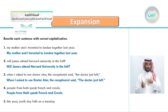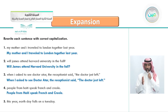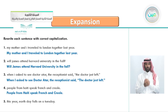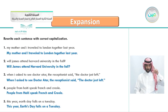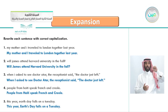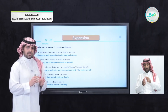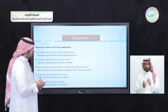Last one, number five: 'this year, earth day falls on a tuesday.' Correction: capital T for 'This' to begin the sentence, capital E and D for 'Earth Day' as a holiday, and capital T for 'Tuesday' as a day of the week.